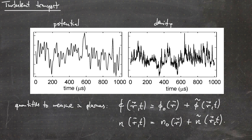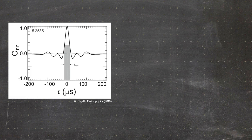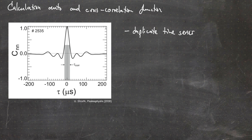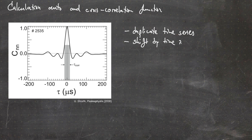One important thing to do with such time traces is to calculate the auto or cross correlation function. To understand the cross correlation function, it is easiest to start with the auto correlation function. To calculate the auto correlation function, you first need to duplicate the time series, and then shift one of the time series by a certain time interval tau.